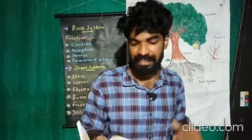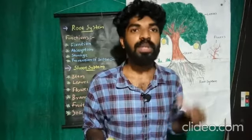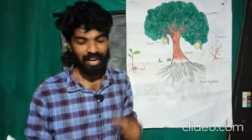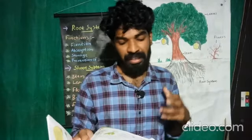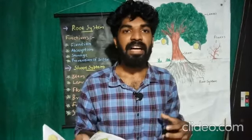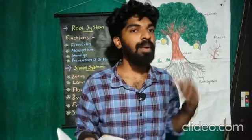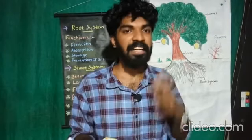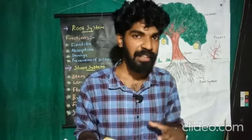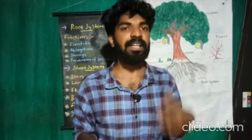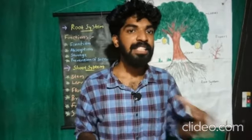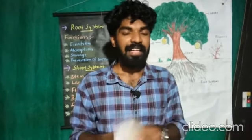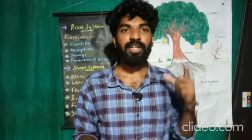For example, potato is a tuber. Turmeric and ginger are also examples of underground stems. This is a picture of a potato plant and this is a turmeric plant.